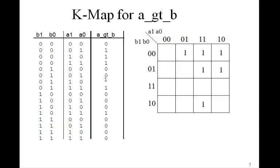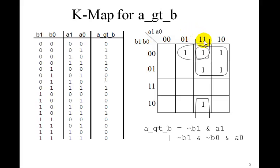Okay, how many circles here? We're going to need three. We have this one, we'll have one up here, and for this one, of course, we can wrap around. So what's this logic equation? This will be not B1 and A1. This one will be not B1 and not B0 and A0. And the wrap around will be not B0 and A1 and A0. Okay, so that's the logic equation for A greater than B.